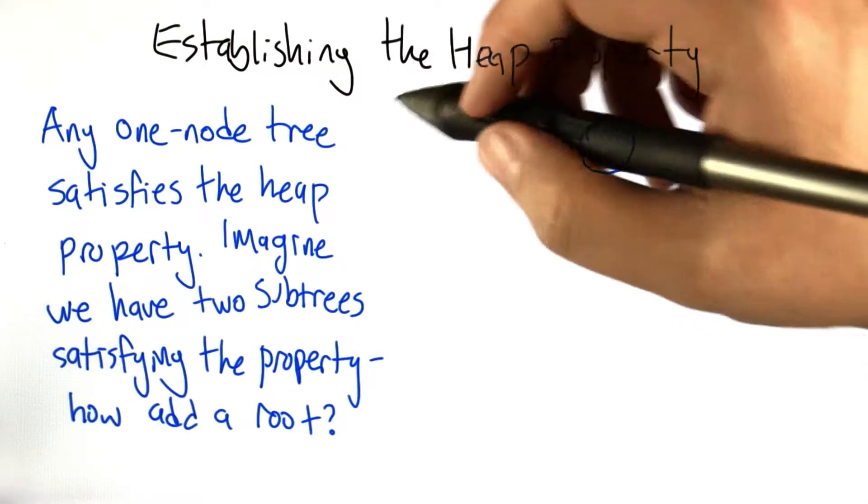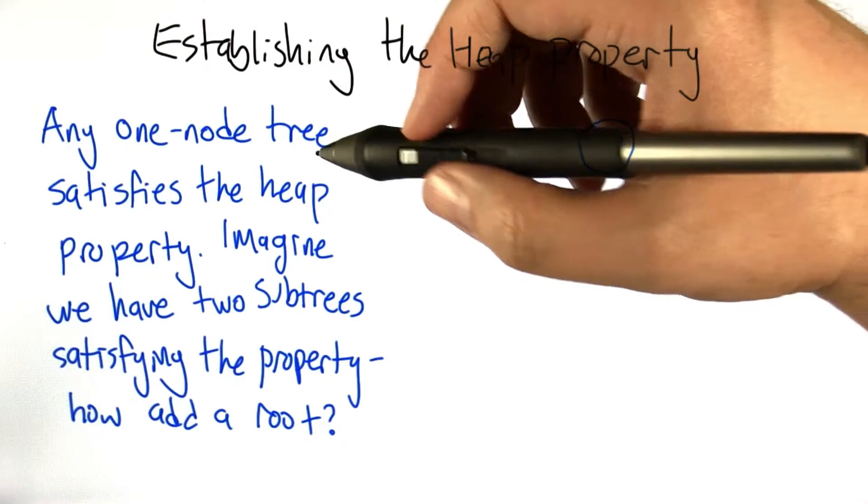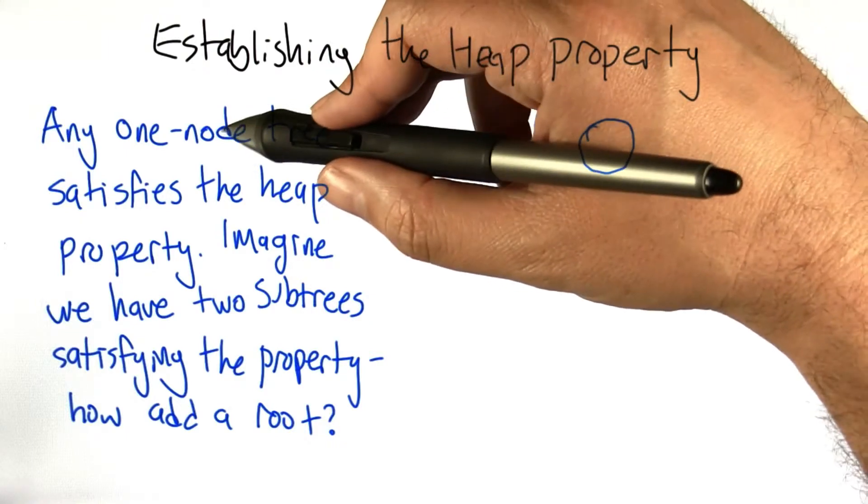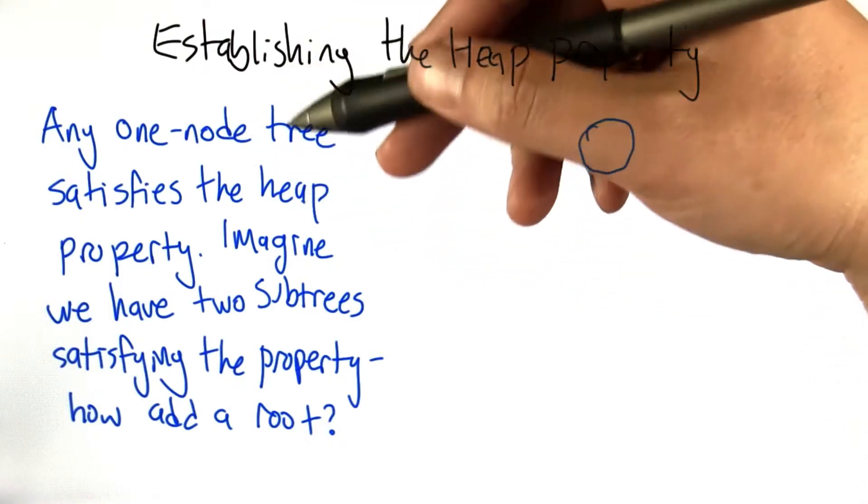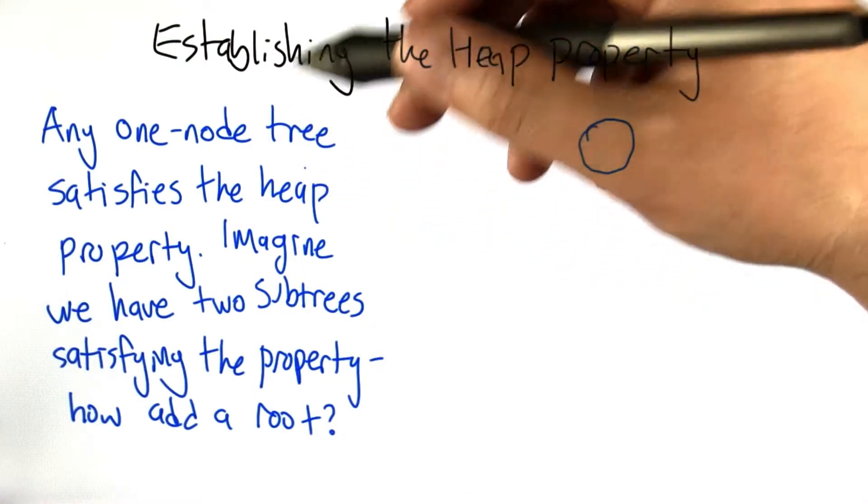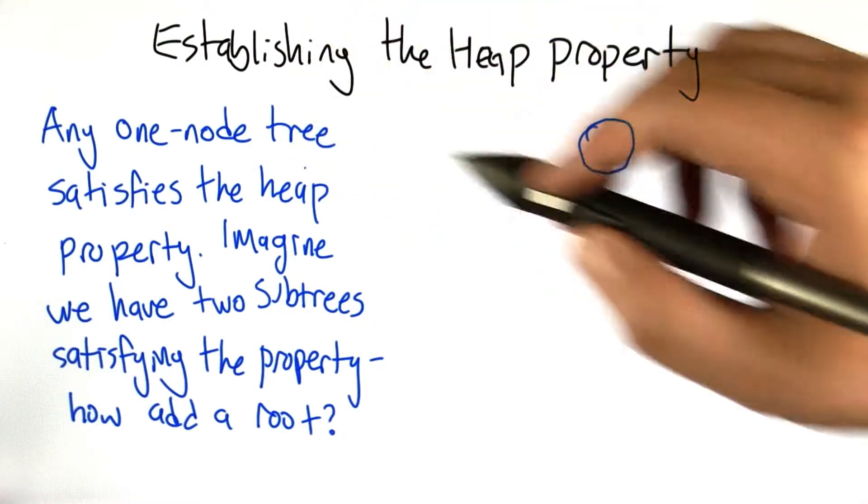Let's start figuring out how that will work. First thing to notice is that any one-node tree satisfies the heap property because it can't be bigger or smaller than the parent or the child, since it doesn't have any parents or children.